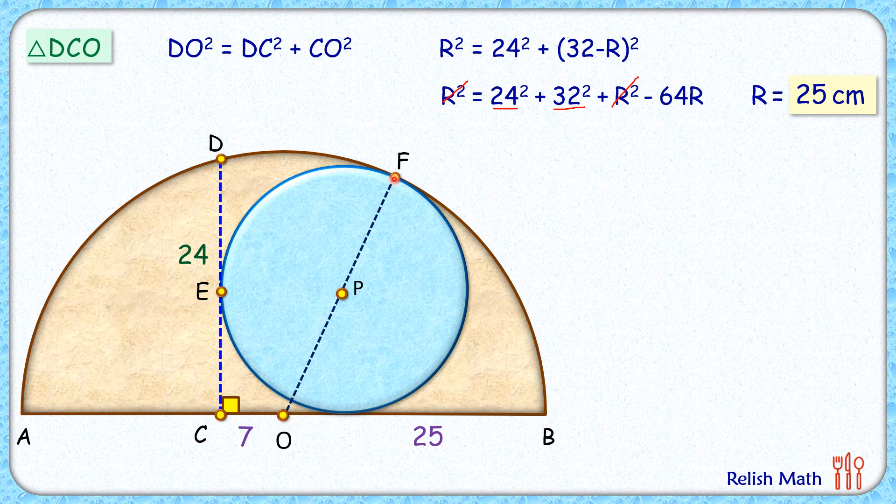OF is capital R. PF, let's say this is the radius of the green circle, that's small r. So OF is 25 centimeters and PF is r. So OP is 25 minus r.